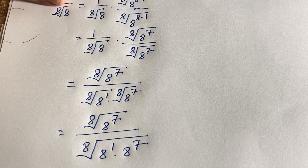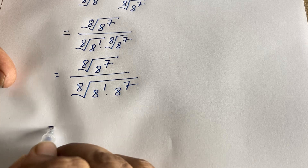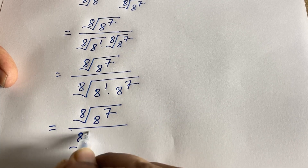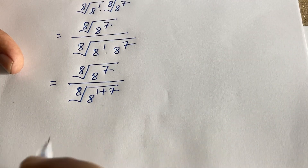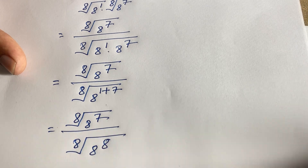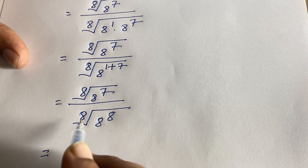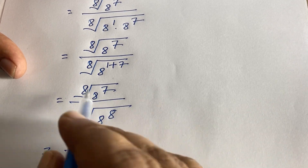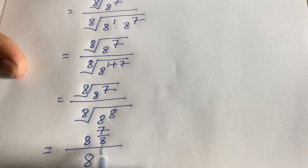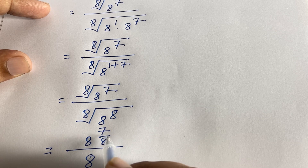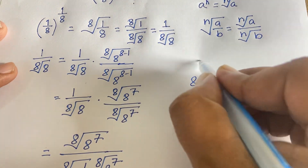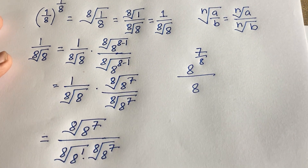We find that the numerator is (8th root of 8)^7 and the denominator is (8th root of 8)^8. Since (8th root of 8)^8 equals 8, the expression simplifies to (8th root of 8)^7 over 8, which equals 8^(7/8).